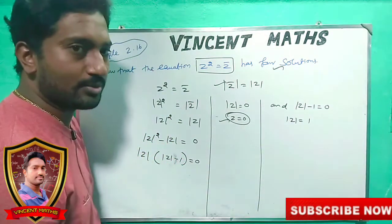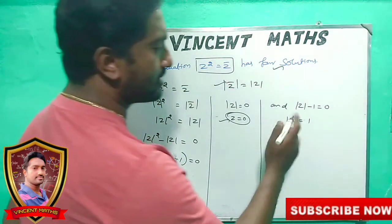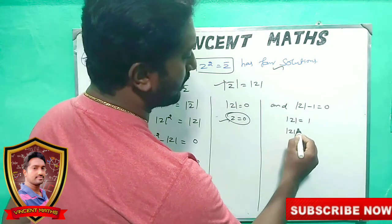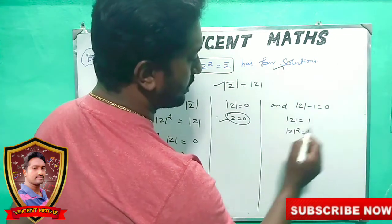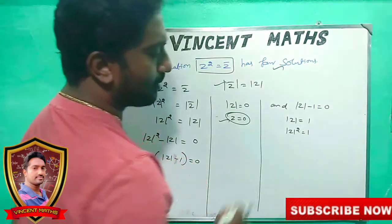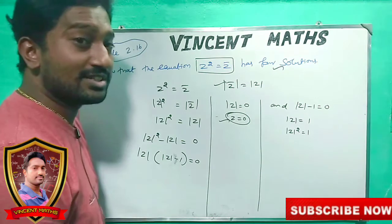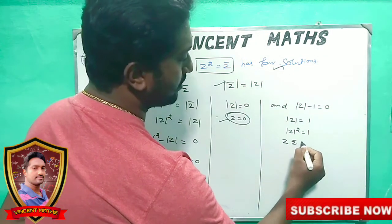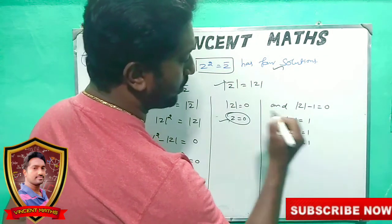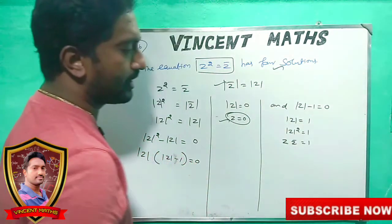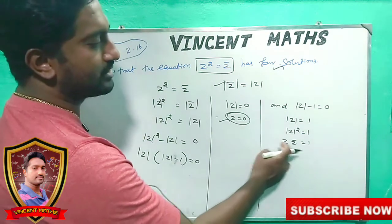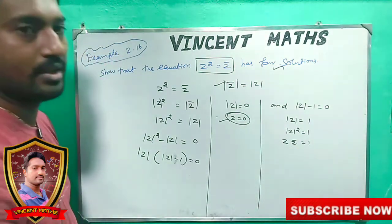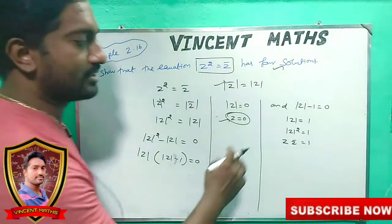Now, how do we do it? 2 sub square. 2 sub square. What do we do? 3 sub widget squared equal to 1 squared — 1 is 1. We know how to do it. It's 1 sub widget equals 1.